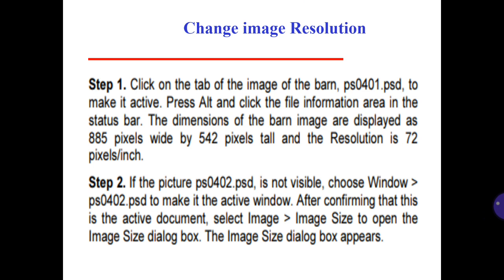Click on the top of the image of the bone to make it active. Press Alt and click the File Information layer in the status bar. The dimensions of the bone image are displayed as 885 pixels wide by 542 pixels tall, and the resolution is 72 pixels per inch. Step number 4: if the picture is not visible, choose Window to make it the active window. After confirming that this is the active document, select Image Size to open the Image Size dialog box.